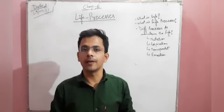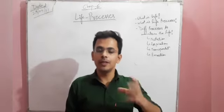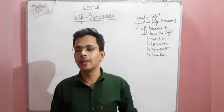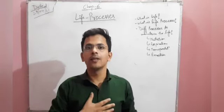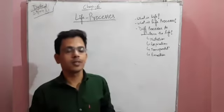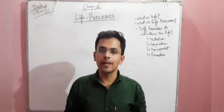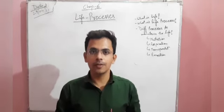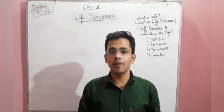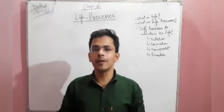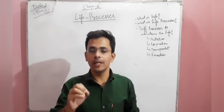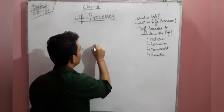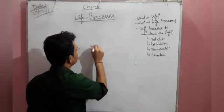The second measure is respiration — organisms that can breathe in and breathe out are living. A marker cannot do that. The third measure is metabolism — any chemical reaction in our body is called metabolism. Metabolism is of two types: catabolism and anabolism.